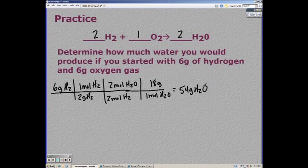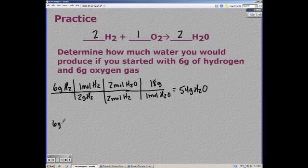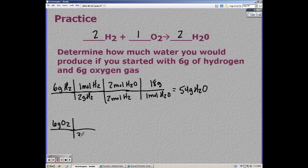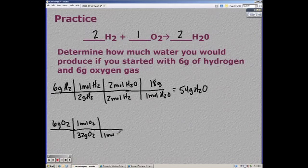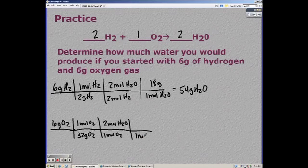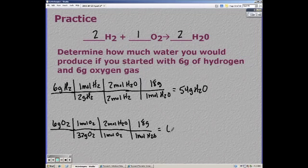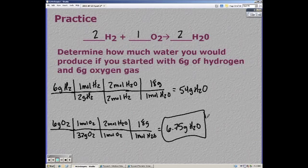Then converting your 6 grams of oxygen to grams of water gives you 6.75 grams of water. So our correct answer is 6.75, making oxygen our limiting reactant and hydrogen is in excess.